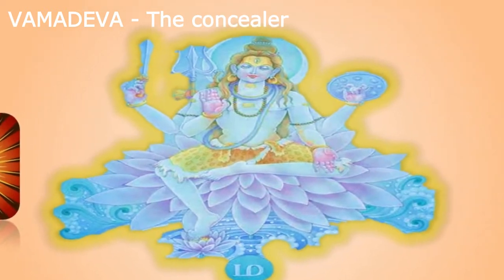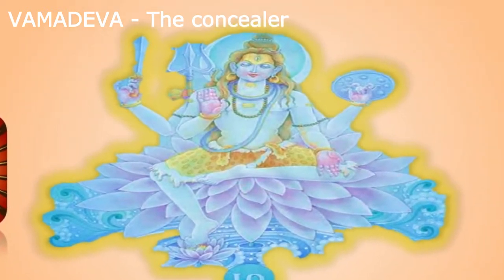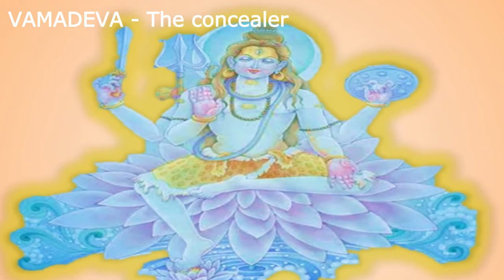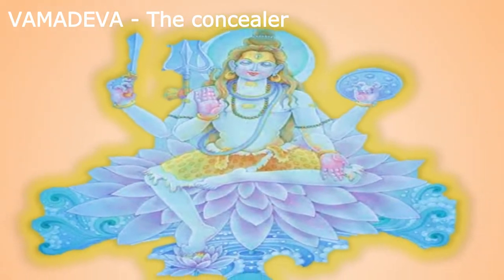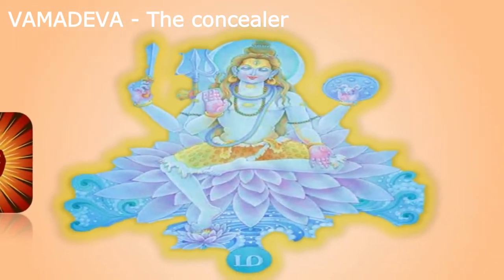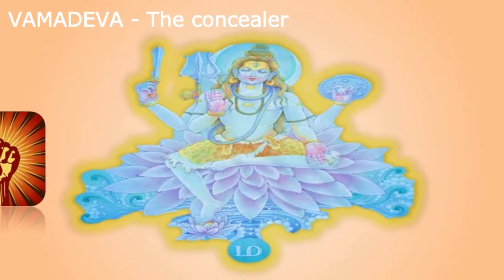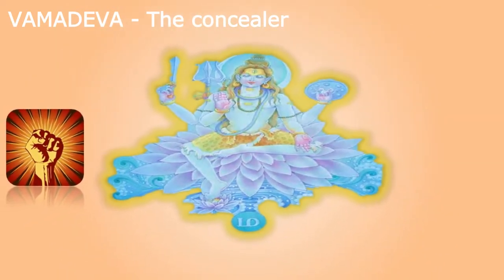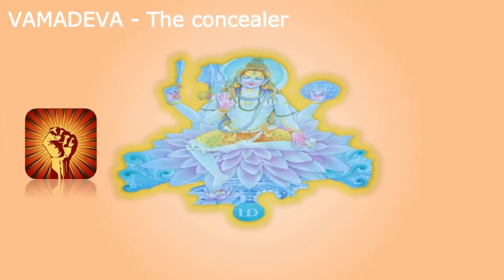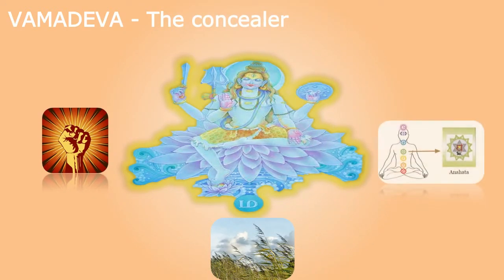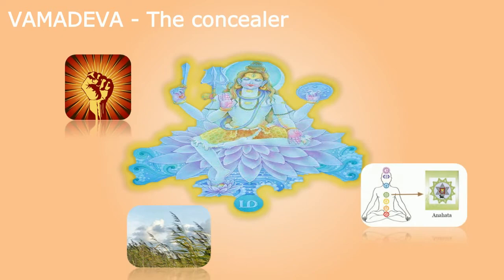It is associated with Vijnanamaya Kosha. This phase is the form of the universal consciousness limited to the individual mind. The mantra to Vamadeva has considerable healing effect. This is the preserving energy of Shiva and is connected with the air element as well as Anahata Chakra.